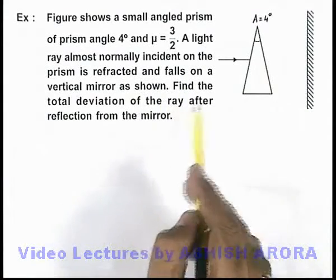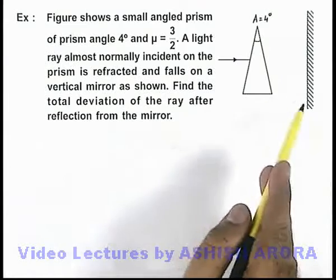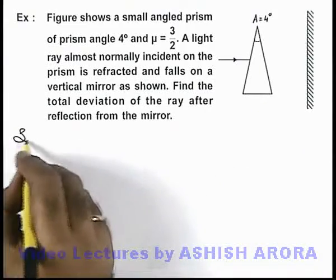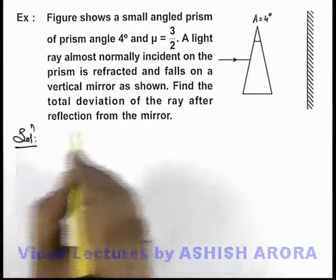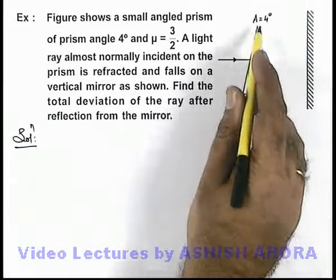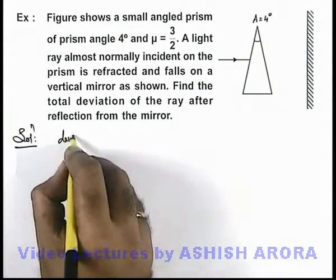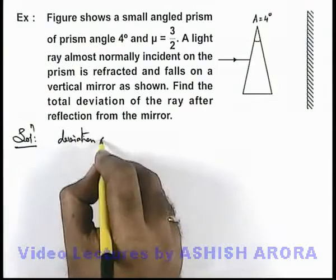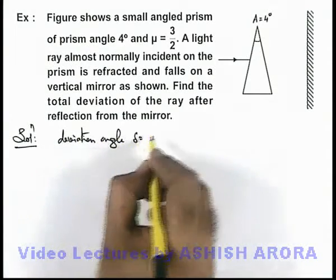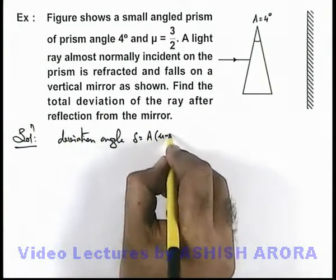We are required to find the total deviation of the ray after reflection from the mirror. In this situation, we know for almost normal incidence for a small angle prism, the deviation angle is given as delta equals A times (μ - 1).